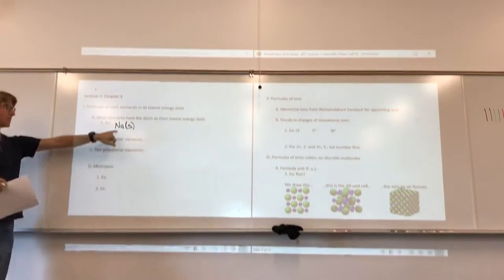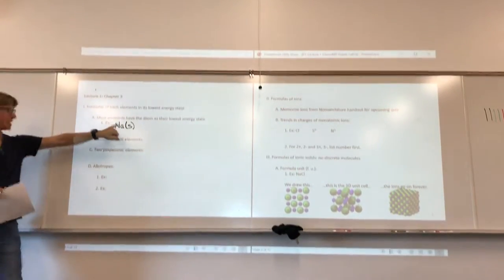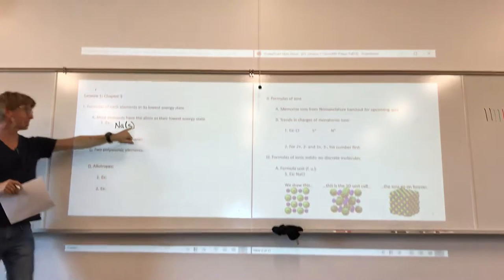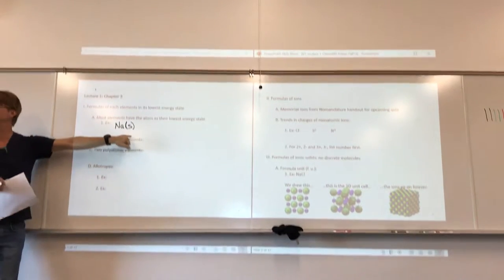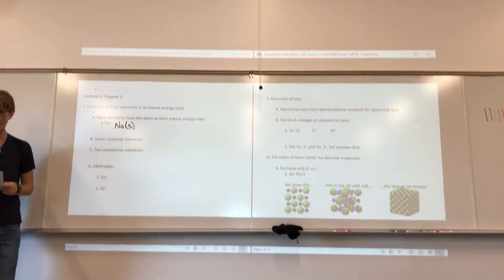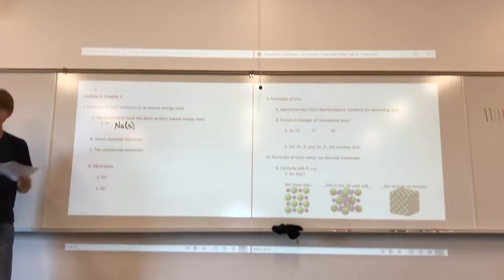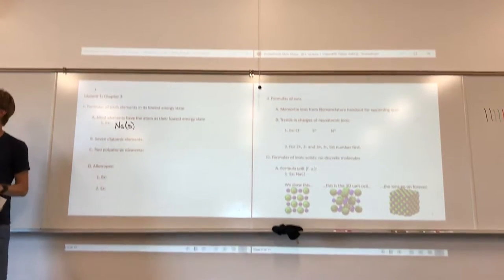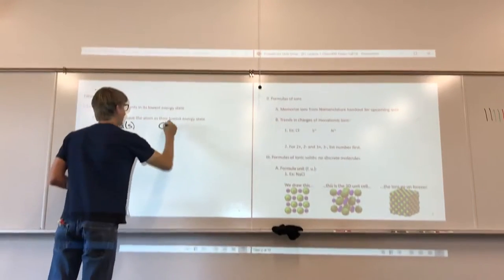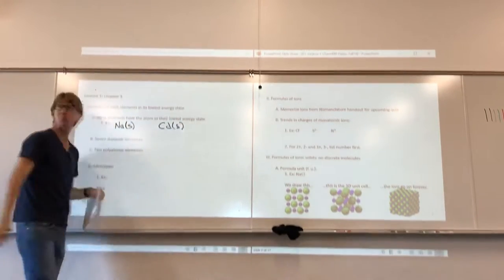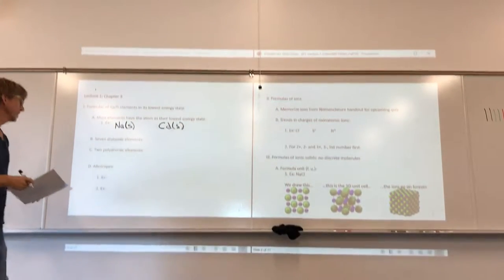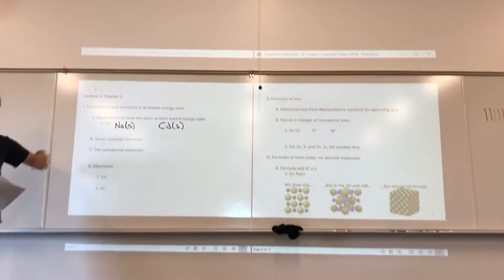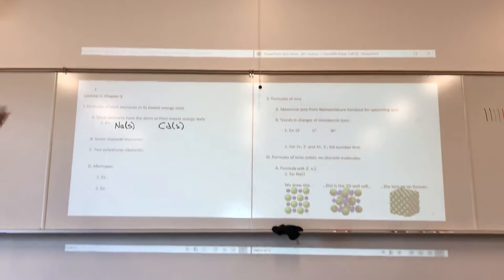Coming back to sodium — sodium is an atom, so it has just a single atom. It is a solid; we can tell that from the periodic table. We could do the same for cadmium as well. There are seven diatomic elements — can anybody tell me all seven of them?